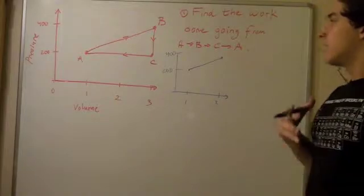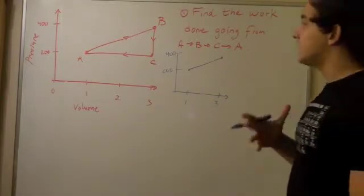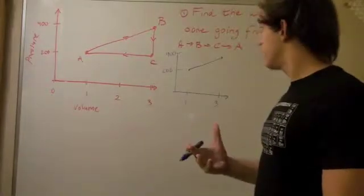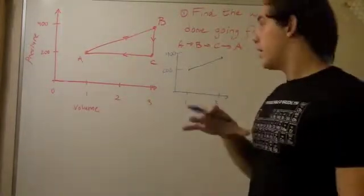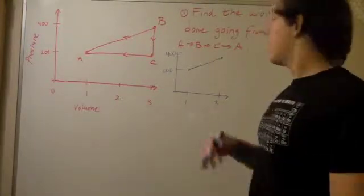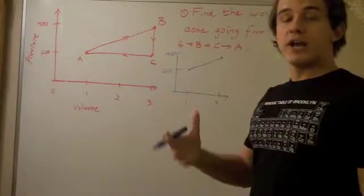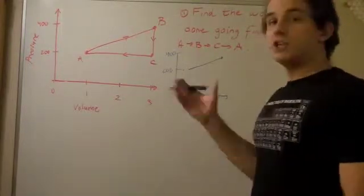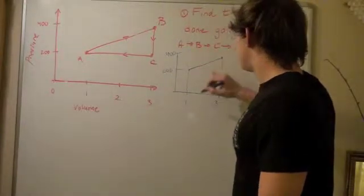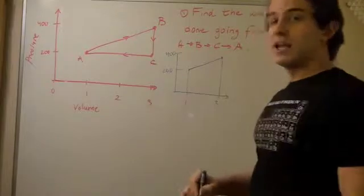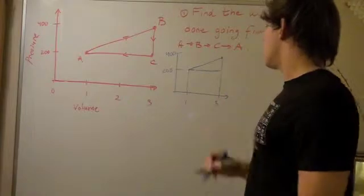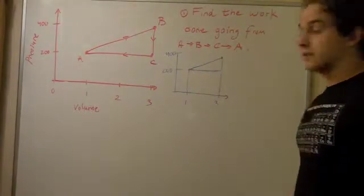And remember, we saw earlier that what is work? Work is simply the area underneath the graph. In this case, pressure isn't constant, and because pressure isn't constant, we can't use the equation work equals pressure times change in volume. What we could do using the graph is draw lines down this way and find this entire area, and the way we do it is we break it down into a triangle and a square, or a rectangle.